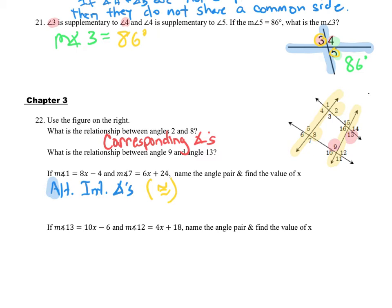When two angles are equal, we set up an equation. We know the measure of angle 1 equals the measure of angle 7, so: 8x minus 4 equals 6x plus 24. The rest is algebra.